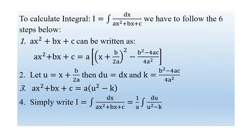To calculate this type of integral, we have to follow six steps. First, we transform the polynomial ah² + bh + c into the form a(h + b/2a)² minus (b² - 4ac) / 4a². You can check this yourself using a simple polynomial, for example h² + h + 1, and try it.